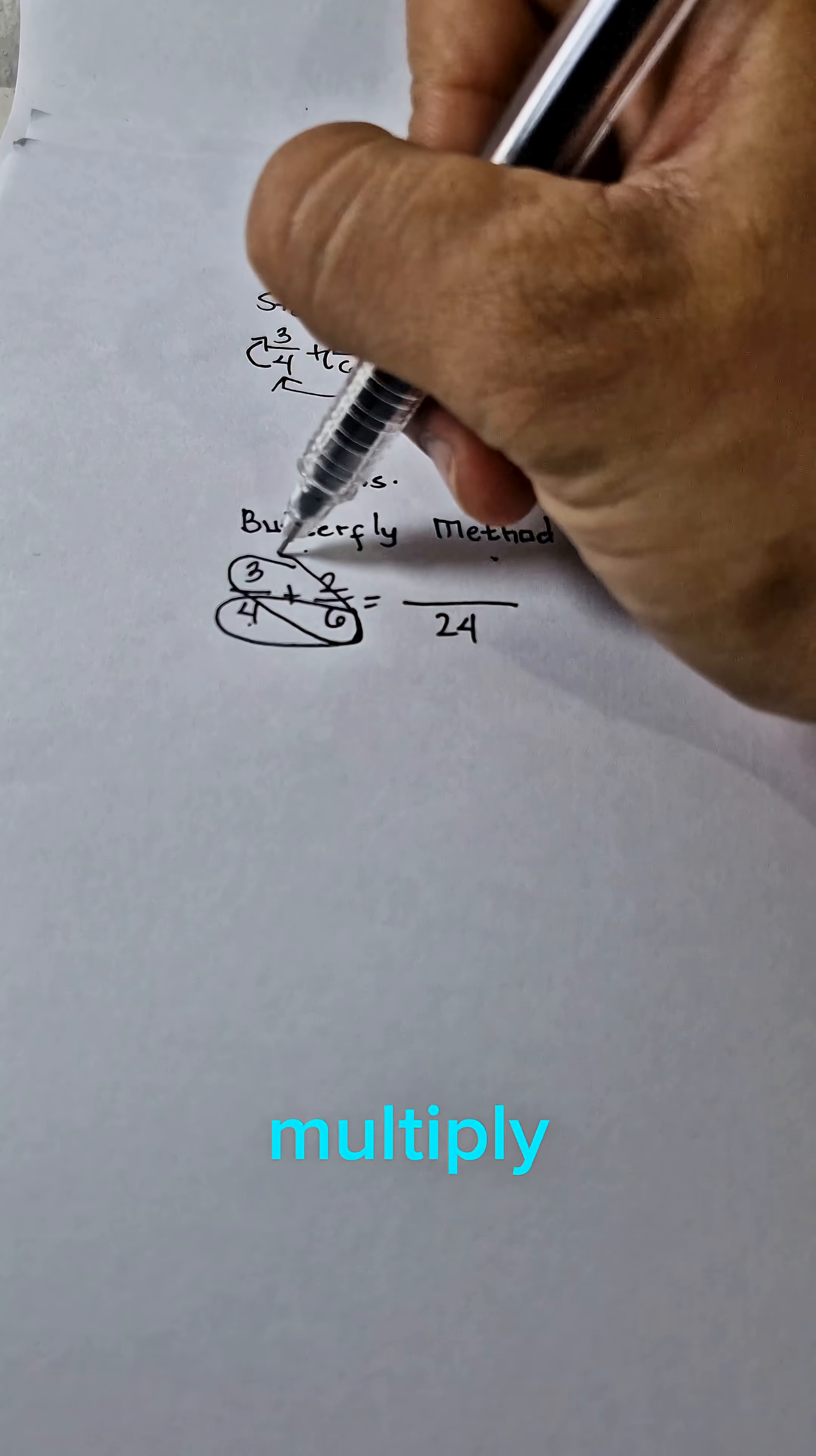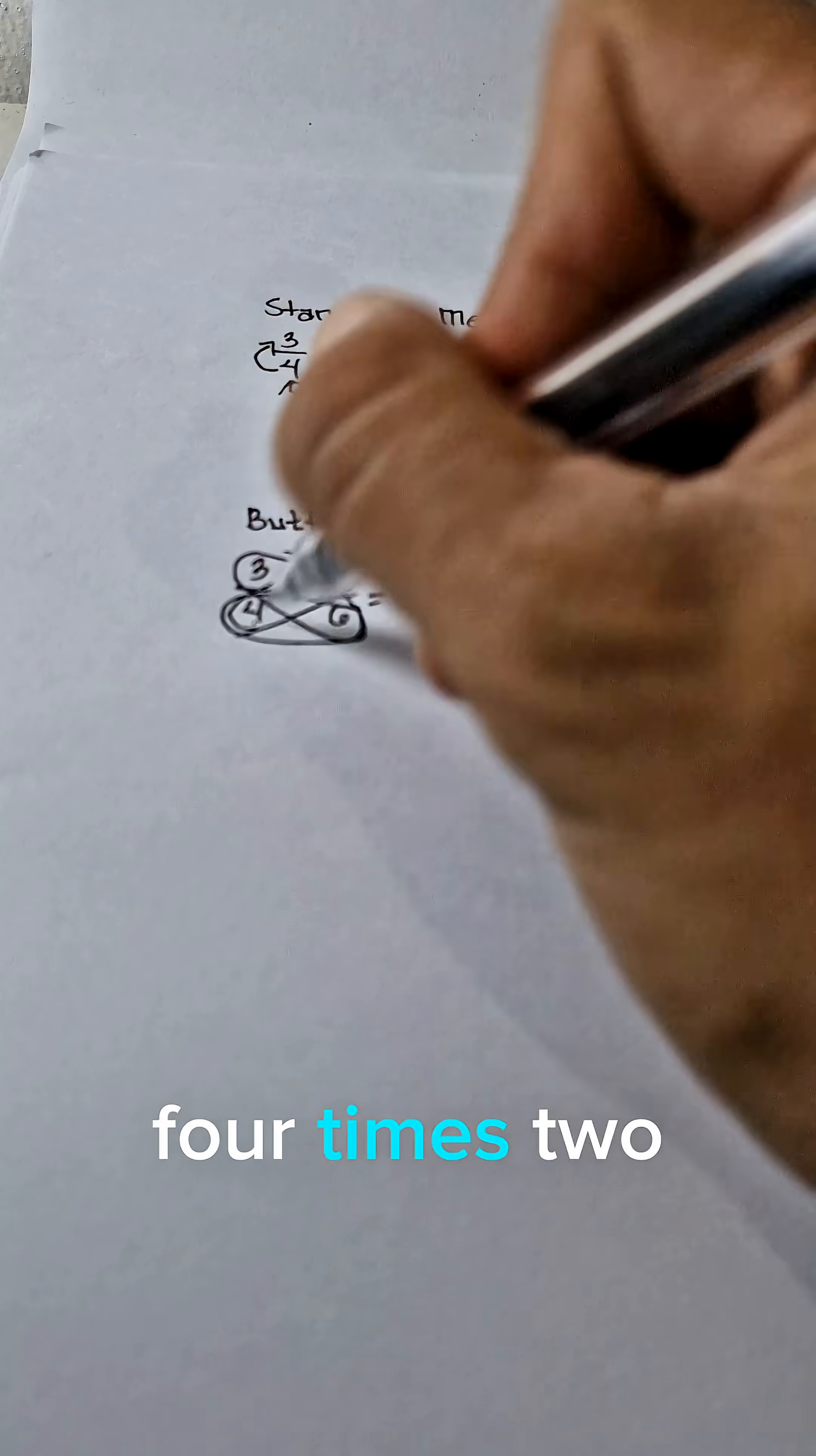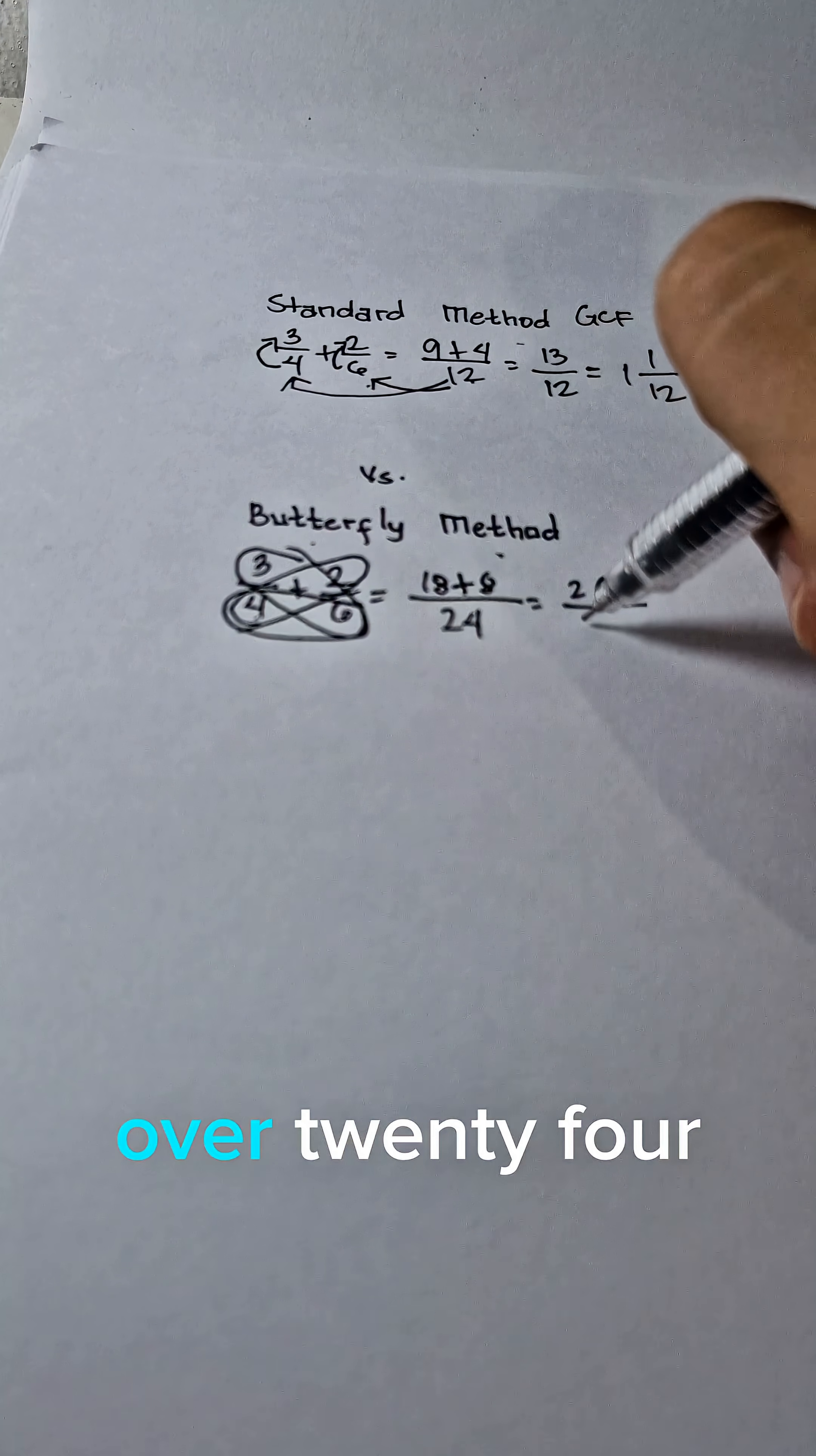And then cross-multiply. 6 times 3 is 18. Copy the operation, which is addition. And then cross-multiply again. 4 times 2 is 8. 18 plus 8 is 26 over 24.